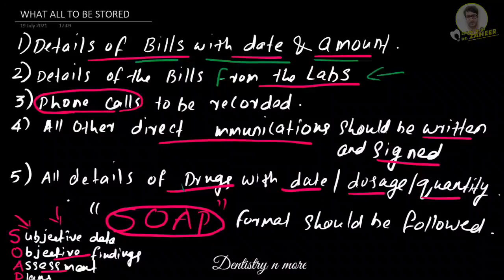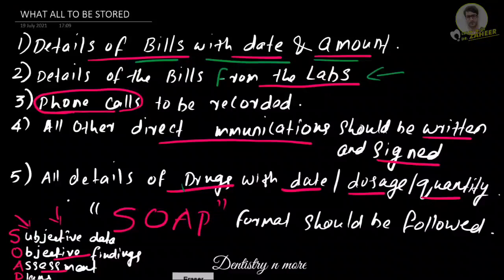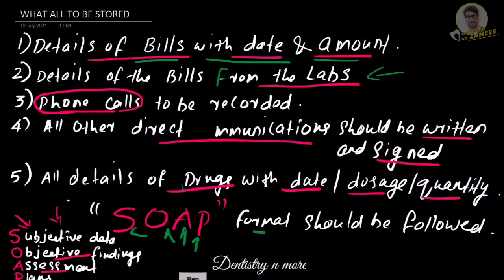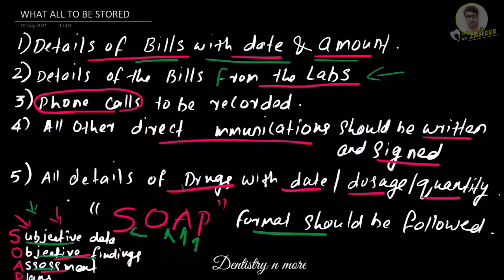All details of drugs, including dosage and quantity, should be written down with dates. We should also take case histories using the SOAP format. SOAP is an acronym for how we should record dental data: S for Subjective data, O for Objective findings, A for Assessment, and P for Plan. We ask the patient about subjective problems, make our objective findings, arrive at a diagnosis for the assessment, and then make plans based on that diagnosis.